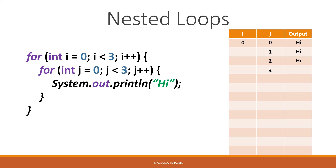We go back up and increment i, changing it from zero to one. We check if i is still less than three — it is — so we step into the loop again. Now that we've stepped into the inner loop, we see it all over again from the beginning, including the initialization step, which resets j to zero.